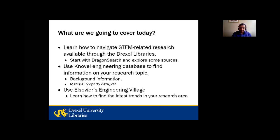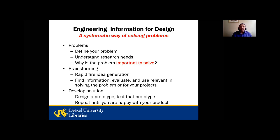So what are we going to cover today? We'll learn how to navigate STEM-related research available through Drexel Libraries. We'll start with Dragon Search and explore some sources — Dragon Search is our discovery platform where you can search across general articles, conference papers, electronic books, and many other things. We'll then go to the Novel engineering database to find information on your research topic, including background information, material property data, and chemical data. And then we'll go to Elsevier's Engineering Village to find the latest trends in your research areas.